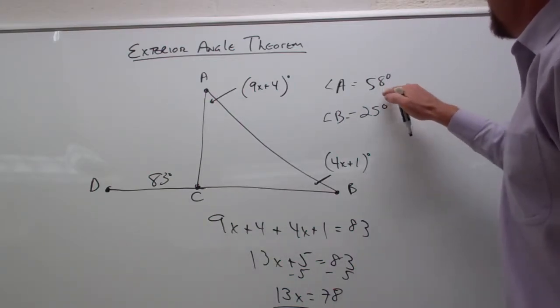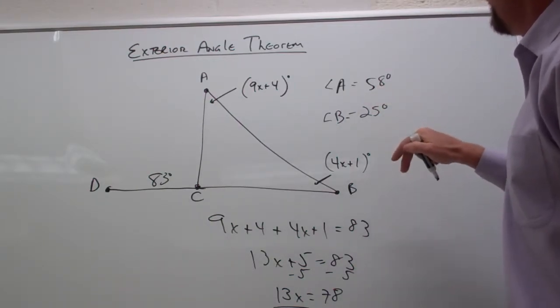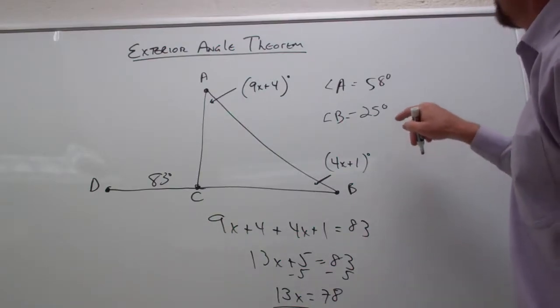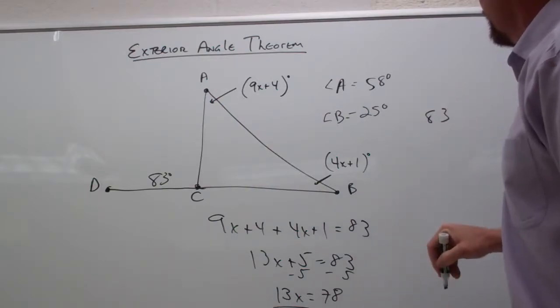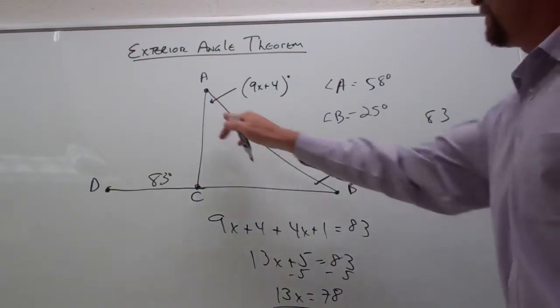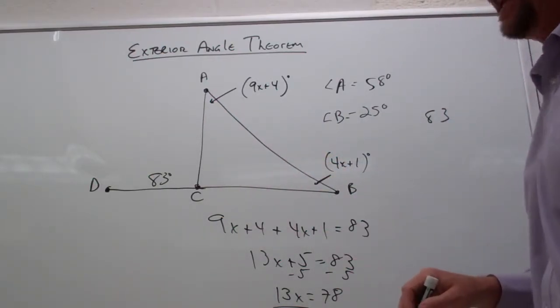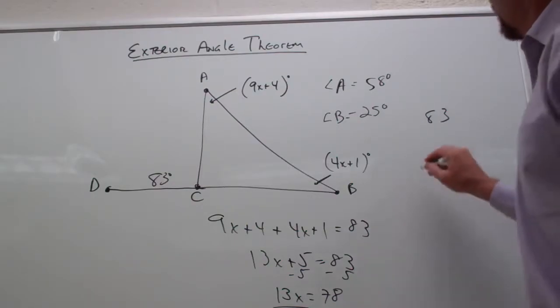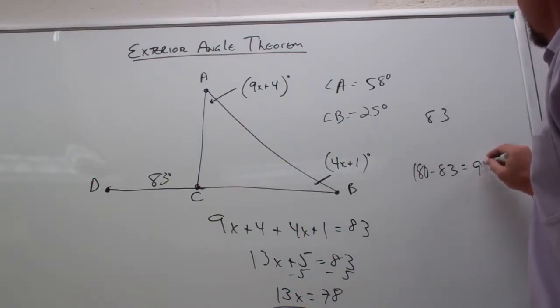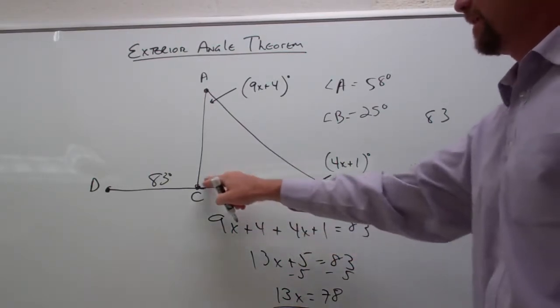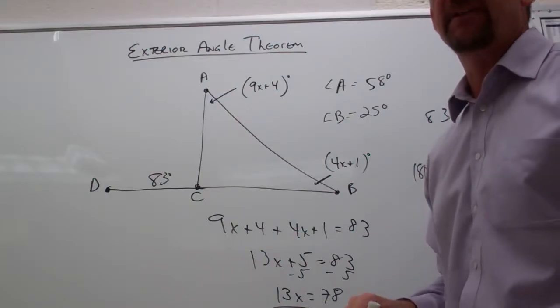So we can add the two angles we got. 58 and 25. 8 and 5 is 13. Gives us 83 degrees. So we know that these two angles have a sum of 83 degrees. 180 minus 83 is going to give us 97. So angle C must be 97 degrees.